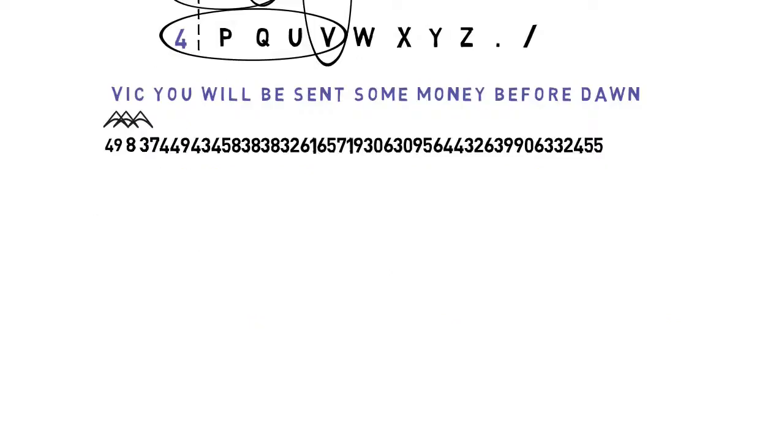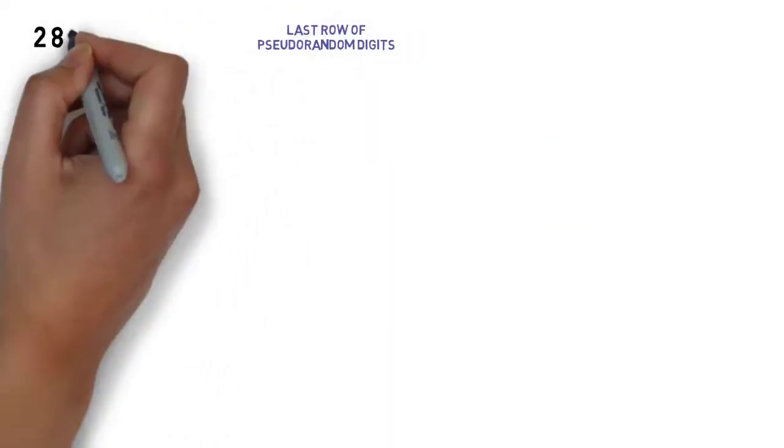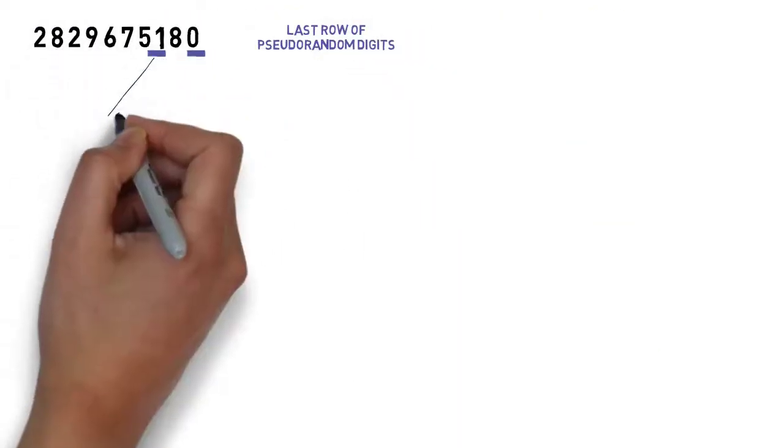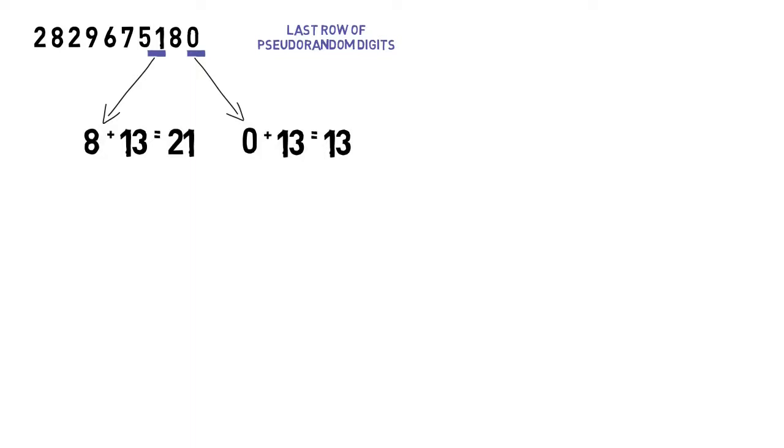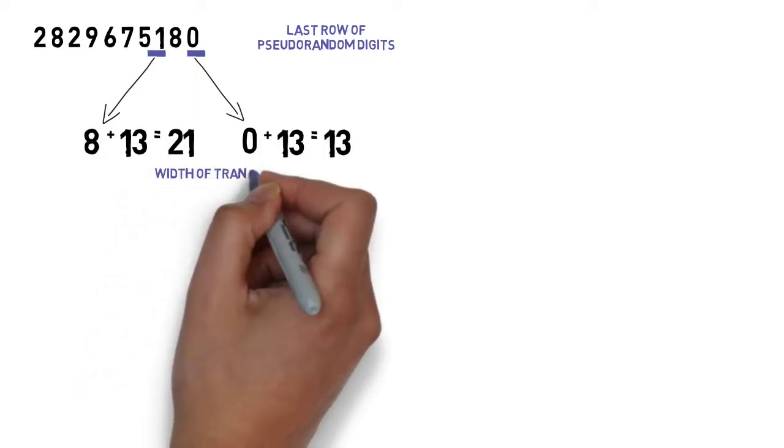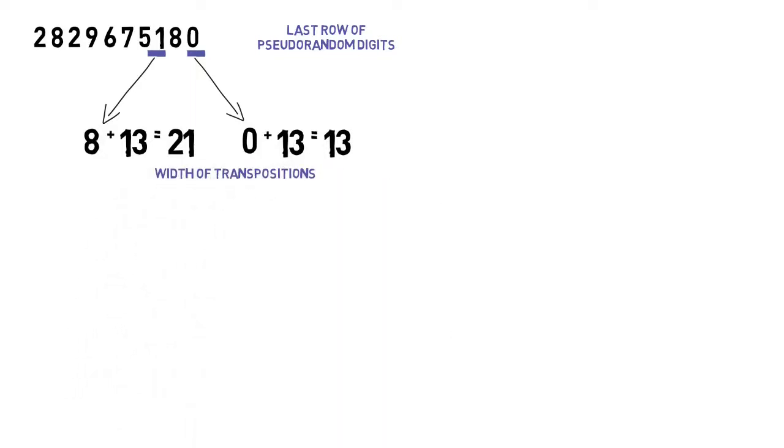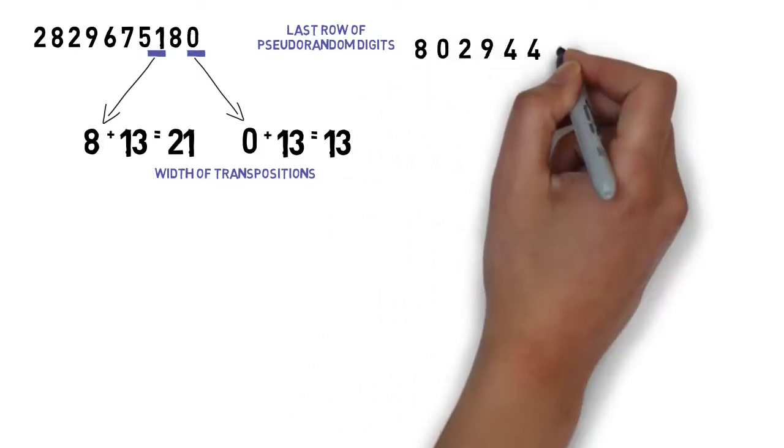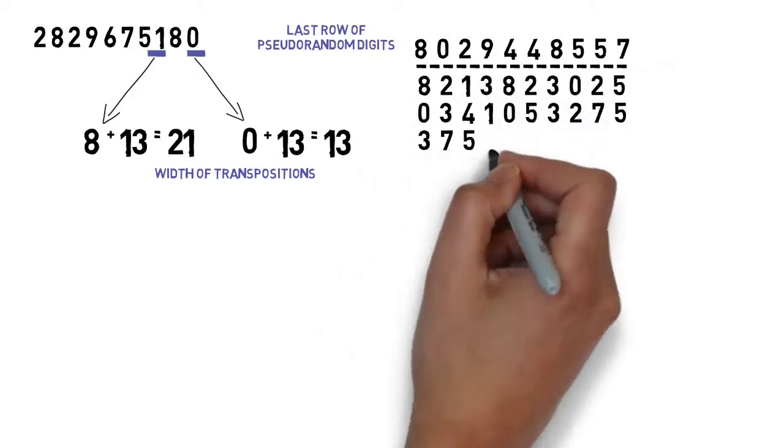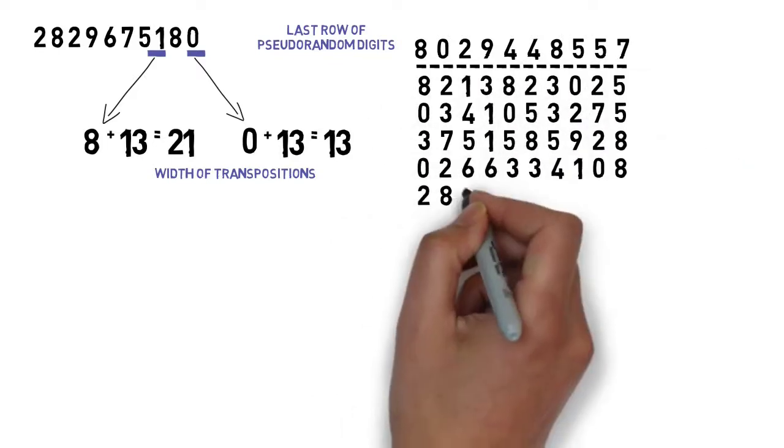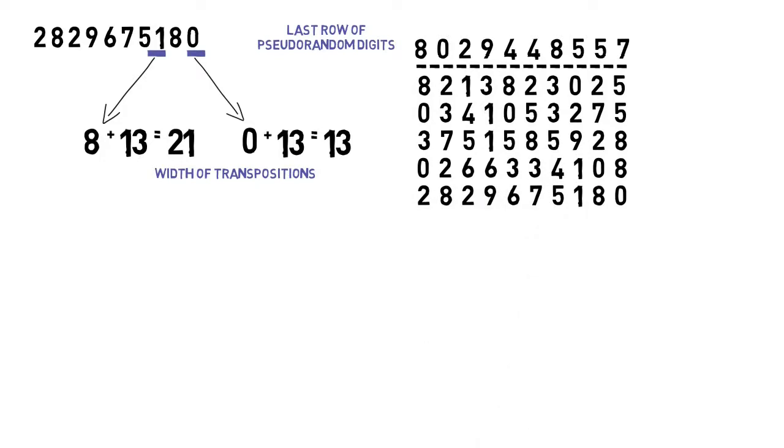From the last row of the 50 pseudorandom digits we generated before, we can determine the last two unequal digits, which are 3 and 0. We add the agent's personal number to each of these digits to determine the width of the two columnar transpositions used to transpose the sequence of numbers we just obtained. To determine the keys of these two transpositions, we read out the 50 pseudorandom digits by column, using the 10 digits we produce them with as a transposition key.